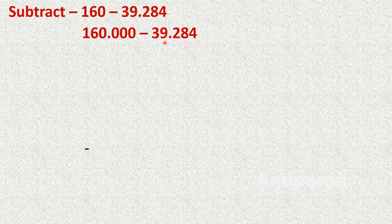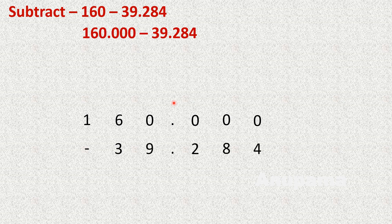Now they are like decimals — three decimal places in each number. We can easily subtract. We write both numbers in column form: 160.000 on top and 39.284 below. Now we will do the subtraction.